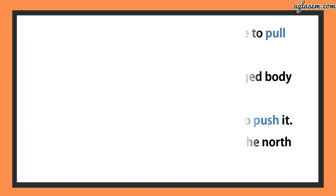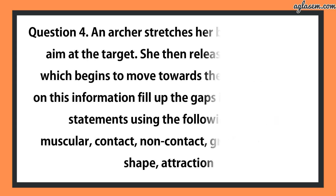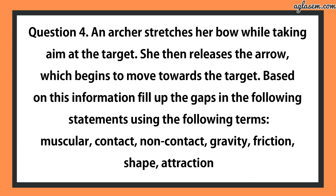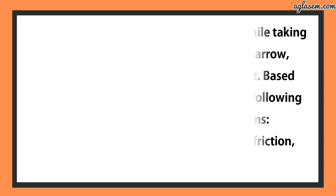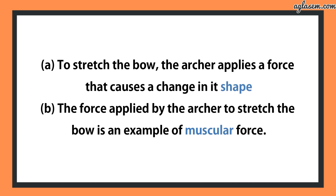Question number 4: An archer stretches her bow while taking aim at a target and then releases the arrow, which begins to move towards the target. Fill in the gaps using the terms: muscular, contact, non-contact, gravity, friction, shape, attraction. First — to stretch the bow, the archer applied a force that caused a change in its [shape]. Second — the force applied by the archer to stretch the bow is an example of [muscular] force.